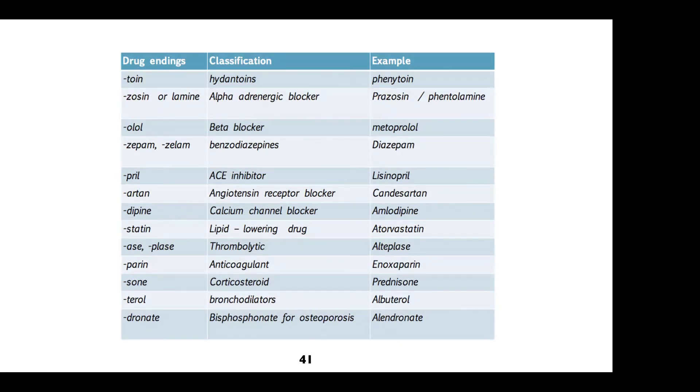So phenytoin, anti-seizure medications. Alpha blockers typically end in zosin. What are these drugs being used for? What is a drug like prazosin being used for? What are alpha blockers used for? Hypertension, good. They're also used for BPH. So when you see zosin, think of hypertension meds and BPH meds.